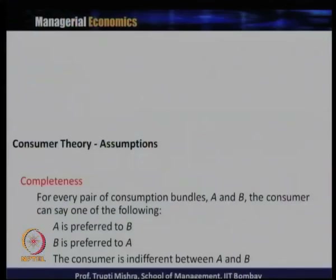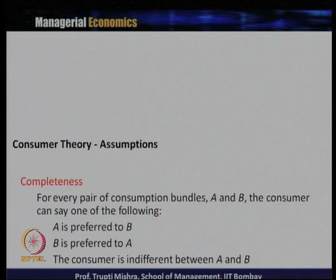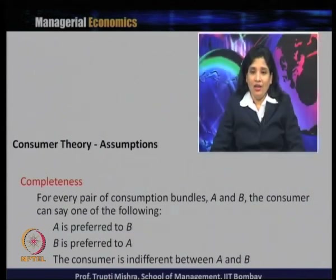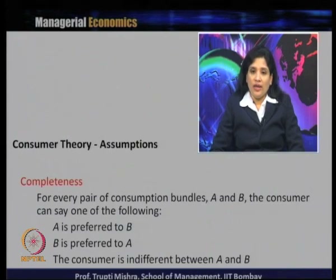There are a few assumptions in consumer theory. The first is completeness. For every pair of consumption bundles A and B — where bundle A contains different categories of goods and bundle B contains a different combination — the consumer can say either A is preferred to B, B is preferred to A, or the consumer is indifferent between A and B.